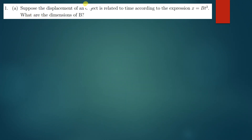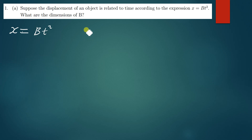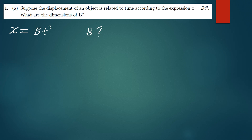They're telling us that displacement, denoted by x, is related to time by the expression x = bt². We've been asked to find the dimensions for b. As mentioned in the introduction to dimensional analysis, you need to know the SI units of most quantities in order to derive dimensions of any variable given in a question.